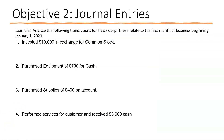Next we'll look at journal entries. Journal entries are how you record transactions in accounting. In Chapter 1 we looked at the tabular form — that's just a way of identifying where things go — but journal entries are really how you record it in accounting. In this example we're going to analyze the following transactions for Hawk Corp., relating to the first month of business beginning January 1, 2020.